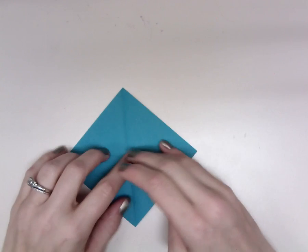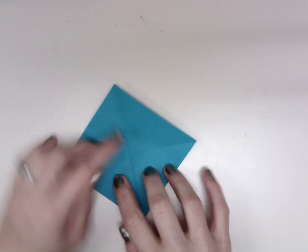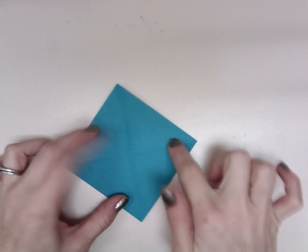Then you'll open up your piece of paper, and by using the creases that you made, you'll see that they've made an X.